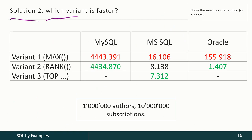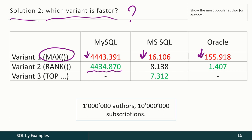Which variant is faster? The MAX approach is the slowest one for all three DBMSs. Some alternatives give almost the same performance, but in some cases we achieve significant changes. Remember that this is not a mathematical rule — this is only for that particular case, and in other cases you may see a different picture.